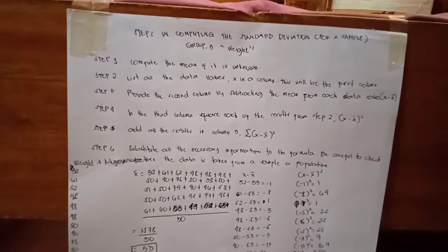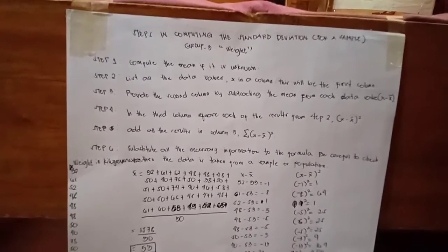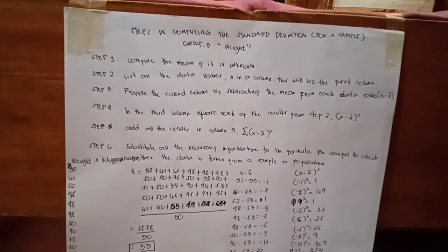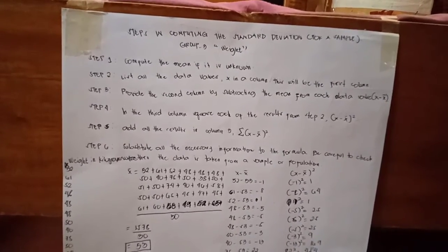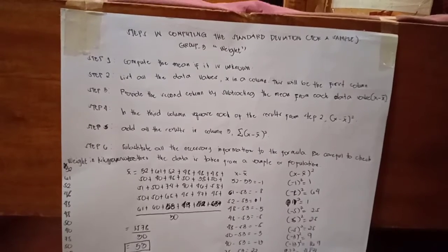So these are the steps. For step 1, compute the mean if it is unknown. Step 2, list all the data values x in a column. This will be the first column.